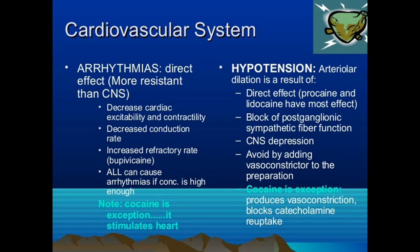Cardiovascular effects include arrhythmia, decreased cardiac excitability and contractility, decreased conduction rate, and increased refractory period - especially with bupivacaine. All local anesthetics can produce arrhythmia at high enough concentrations. Cocaine is again an exception as it stimulates the heart, while others depress it. Local anesthetics can produce hypotension due to arteriolar dilation - directly as with bupivacaine and lidocaine, or by blocking post-ganglionic sympathetic fiber function or CNS depression. These effects can be avoided by adding a vasoconstrictor.